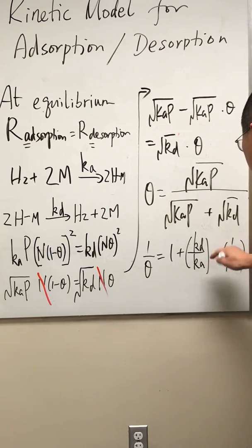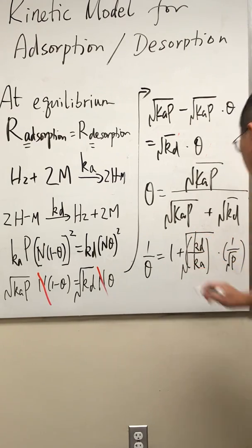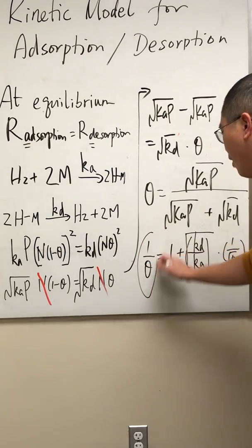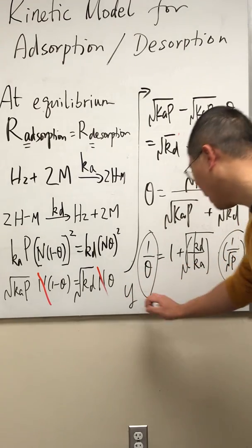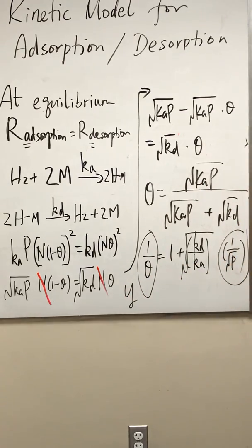Maybe I should just use square root for consistency. Alright, so if you have experimental data of theta and p, you need to convert them to 1 over theta. That's your vertical axis or y-axis, and you need to convert p to 1 over the square root of p. That's your x-axis or horizontal axis.